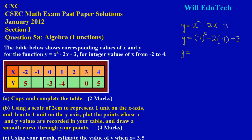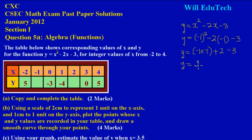(-1)² means -1 × -1. A negative times a negative gives a positive, so that's +1. Then -2 × -1: a negative times a negative gives +2. So we have y = 1 + 2 - 3. That gives us 3 - 3, which equals 0.